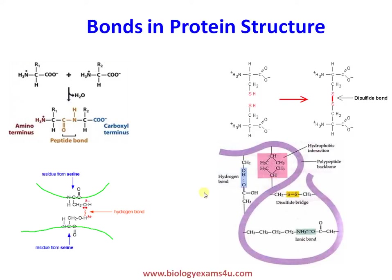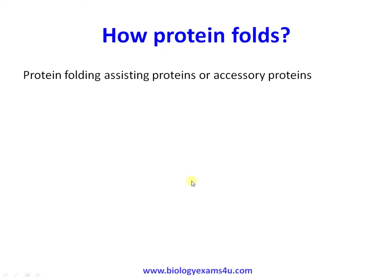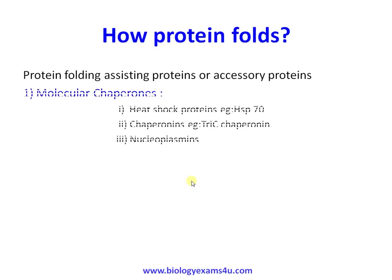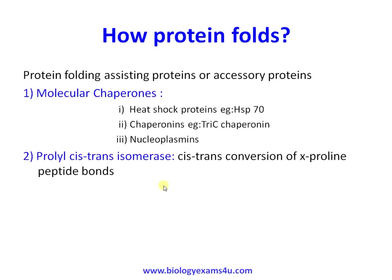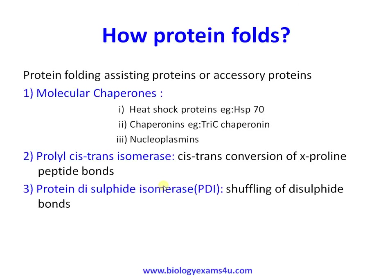Protein folding is assisted by proteins called molecular chaperones. This group includes heat shock proteins like HSP70, chaperonins, nucleoplasmins, prolyl cis-trans isomerase — which is involved in the conversion of trans proline peptide bonds — and PDI, protein disulfide isomerase, involved in shuffling of disulfide bonds.